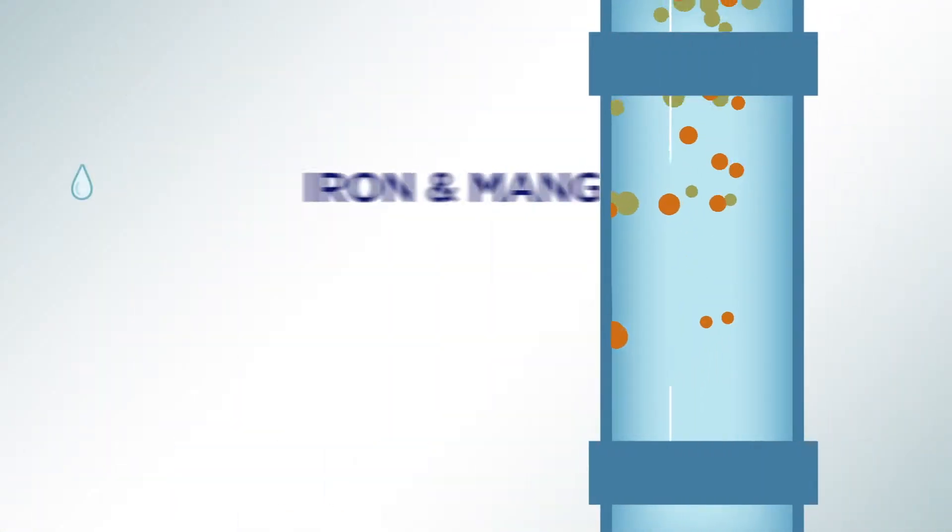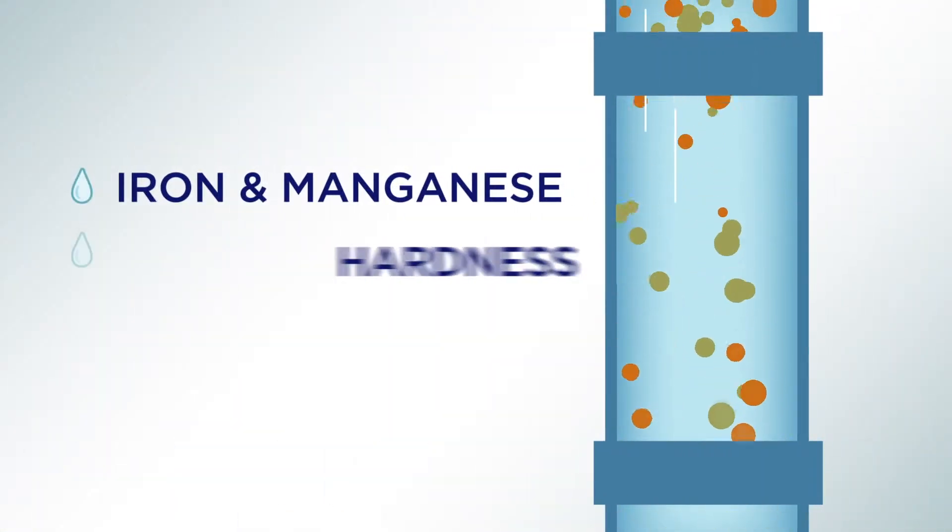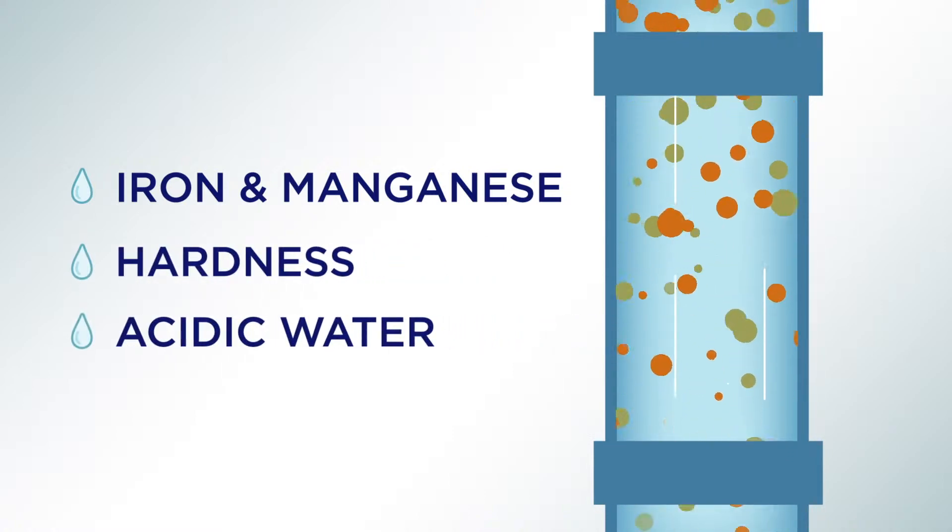Crystal Rite has the ability to remove iron and manganese, reduce hardness, and help neutralize acidic water that causes corrosion, doing three jobs at once.